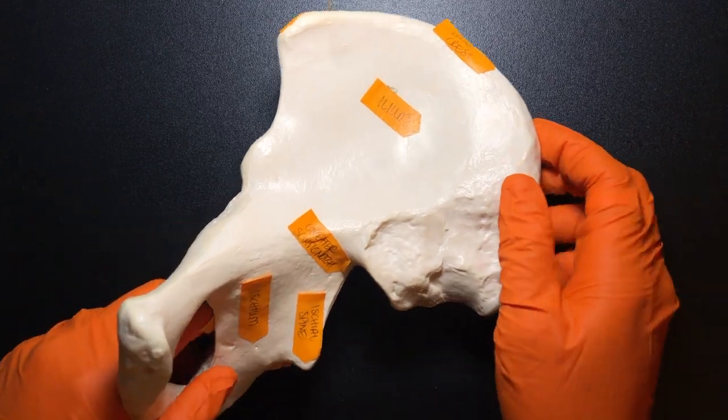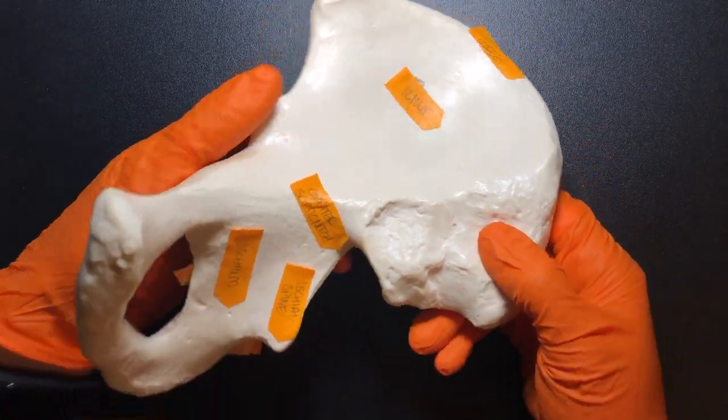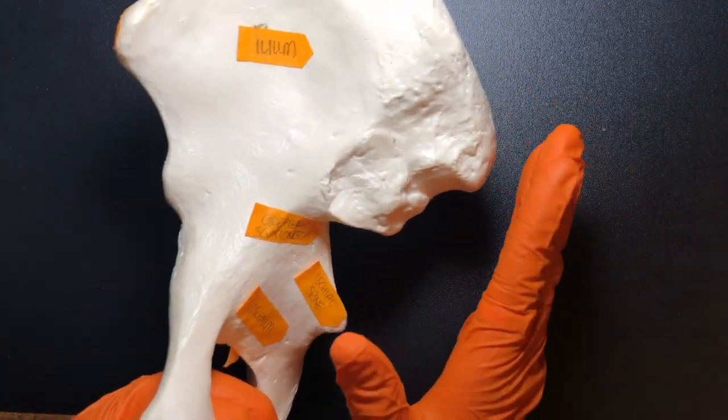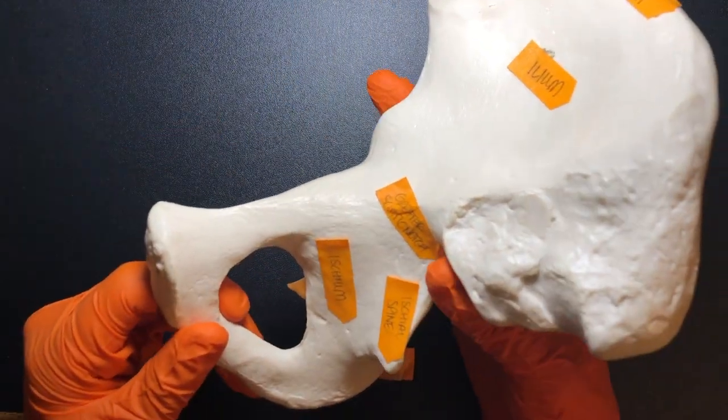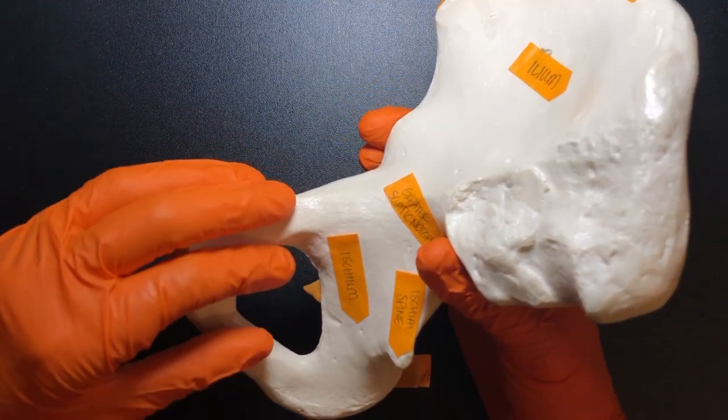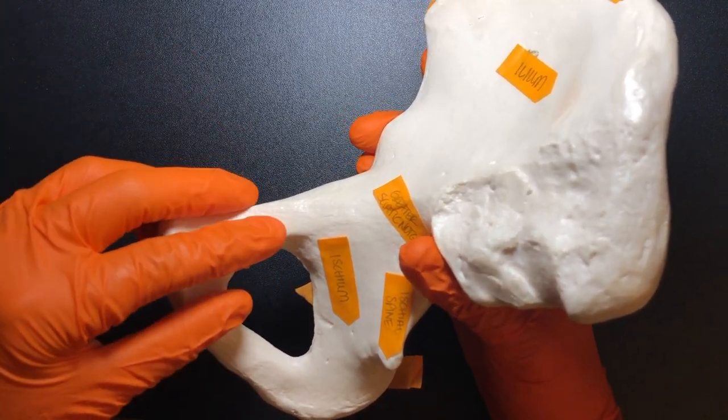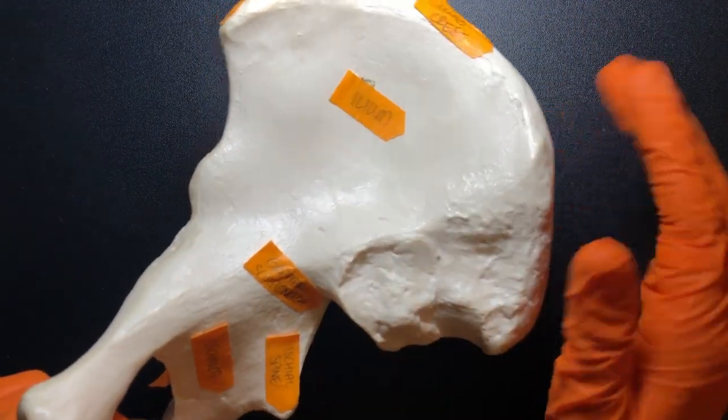Okay, let's look at the coxal bone. This is the right coxal bone to be specific, and the other half together with this would make up the os coxie or the pelvic girdle. So the different parts of the coxal bone will be the pubis, or where your pubic bone would be, this is the ischium, and then up here is the ileum.